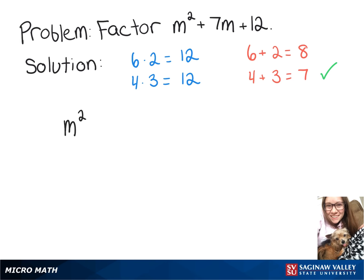Now we can rewrite m squared plus 7m plus 12 in its factored form, which we'll divide this up into parentheses. We'll have m plus something and m plus something else. And then we just found those numbers to fill in, so it'll be m plus 4 times m plus 3.